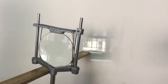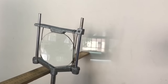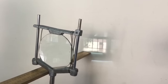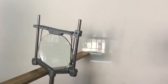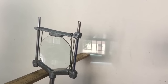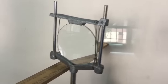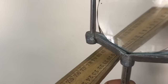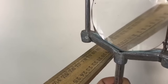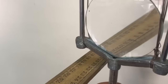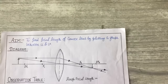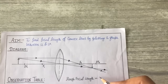Watch the wall carefully. First a faded image is forming — let me shift slightly. Now you can see the image is starting to become sharp. Wherever the sharpest image forms, that distance between the wall and the lens will be the focal length. The distance is coming out to be around 20 cm, so our rough focal length for this convex lens is 20 cm.